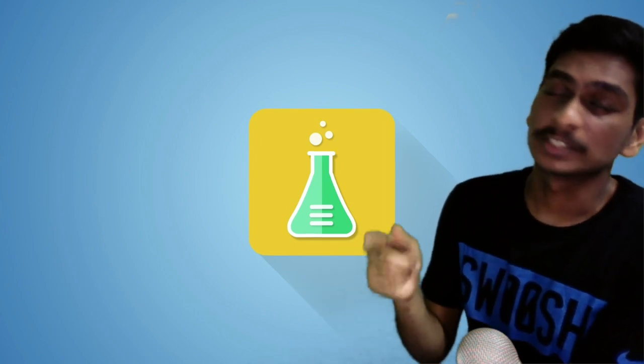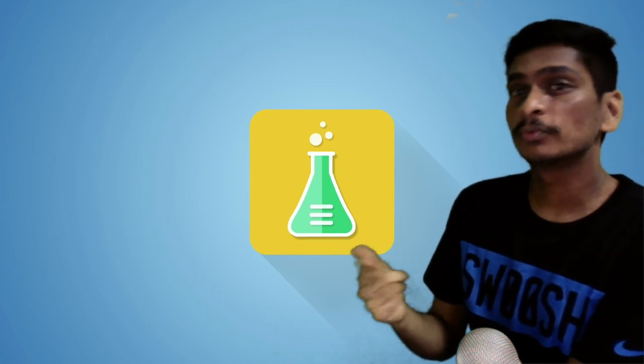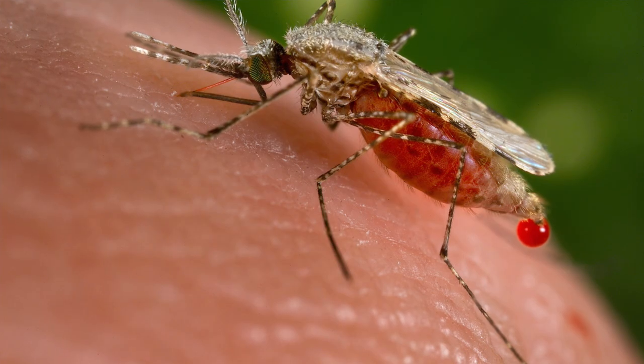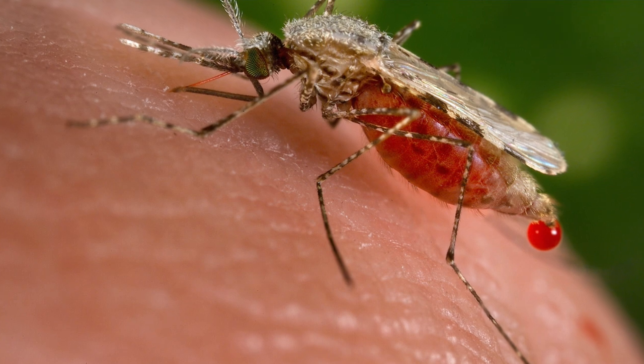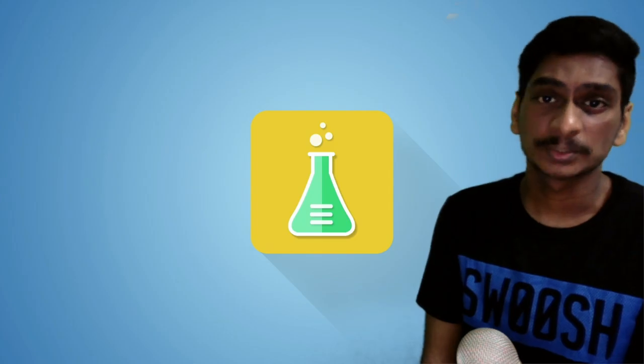And then if it sits on your food, the food gets contaminated and the person who consumes the food falls sick. Another example is the female anopheles mosquito, which carries the parasite of malaria, plasmodium.